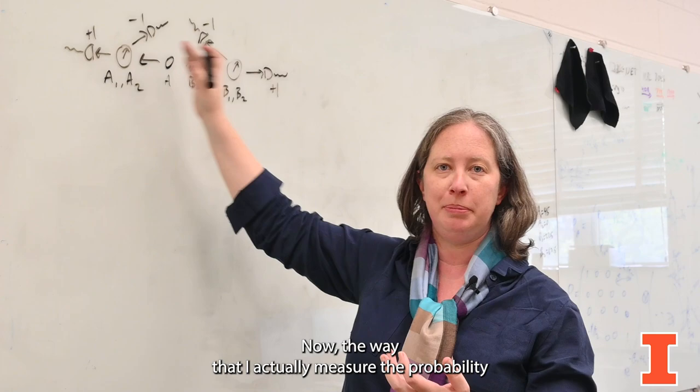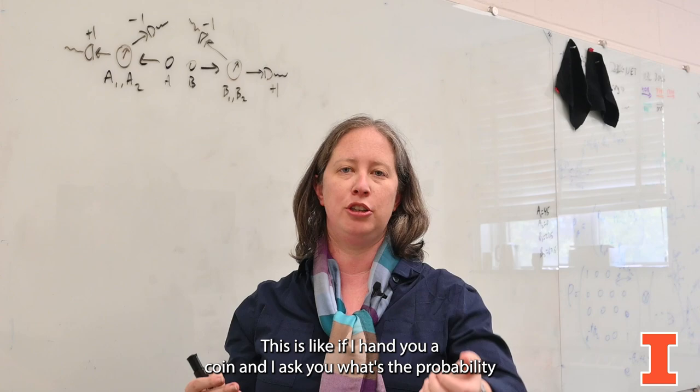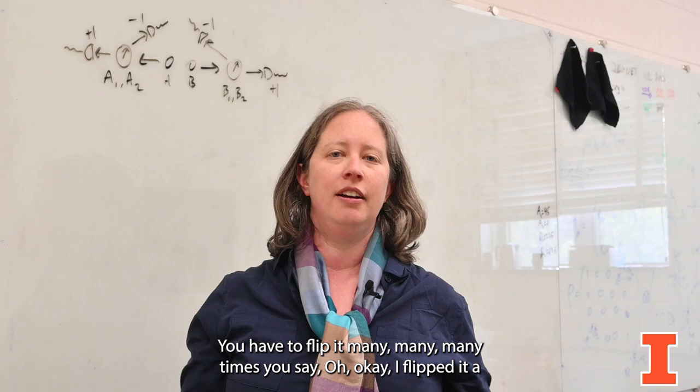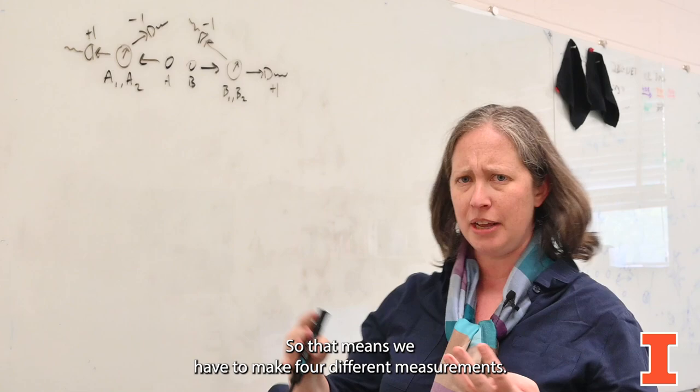The way that I actually measure the probability that the photons go through these polarizers is I have to make my photons many, many, many times and make these measurements many, many, many times so that I can get out the probabilities. This is like if I hand you a coin and I ask you what's the probability that this coin is heads when you flip it, you can't just flip it once and tell me what the probability is. You have to flip it many, many, many times. You say, okay, I flipped it a thousand times and five hundred and twenty of the times it came up heads. It's probably a fair coin. Can't do that on a few flips.